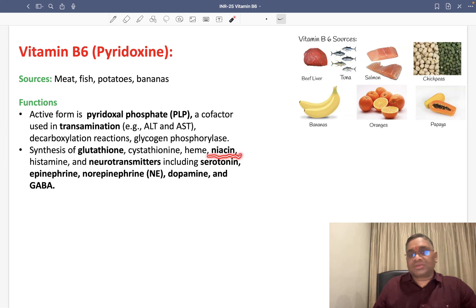They are also associated with niacin synthesis. Remember in niacin, I have told you tryptophan, vitamin B2, and vitamin B6 are important for synthesis of niacin. They are also part of histamine and they will also help in synthesis of neurotransmitters. What are the neurotransmitters? Serotonin, epinephrine, norepinephrine, dopamine, and GABA.